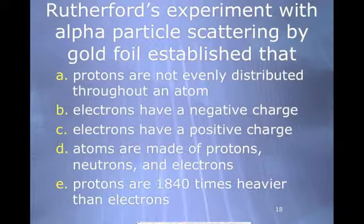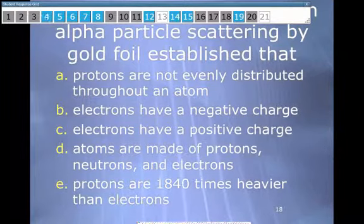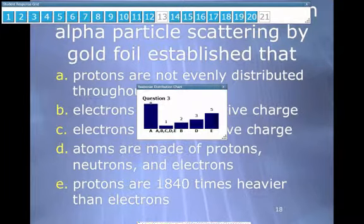Rutherford's experiment with the alpha particle scattering by gold foil established that. We have a lot of answers. Okay, who put A, B, C, D, E? The answer is A, yes. So he found that the protons were in that nucleus. He found the nucleus.